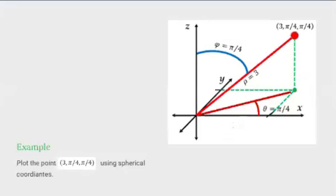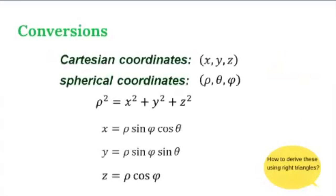Let's try to plot the point (3, π/4, π/4) in spherical coordinates. Observe that the point is 3 units from the origin. We measure π/4 radians from the positive x-axis and π/4 radians from the positive z-axis. Consequently, we have the following conversion formulas. Similar to cylindrical coordinates, these conversion formulas can be computed using right triangles — it is a nice exercise for your trigonometry skills, and you should try it. Can you see some similarities between these formulas and those of polar coordinates?